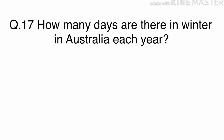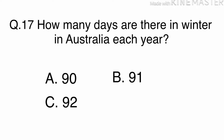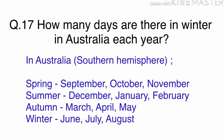Question 17. How many days are there in winter in Australia each year? Australia is in the Southern Hemisphere. This means that September, October and November are in spring; December, January and February are in summer; March, April and May are in autumn; and June, July and August are in winter.